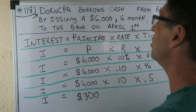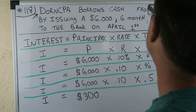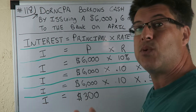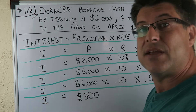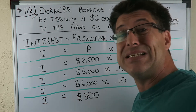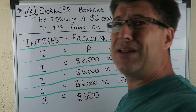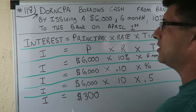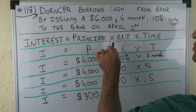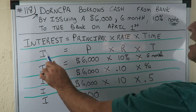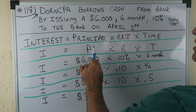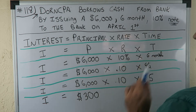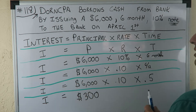In the last video, 117, we recorded a note payable. In the next one we're going to pay the interest, but we have to figure out what the interest is. What's the interest, CPA Strength? Simple interest formula is: Interest equals Principal times Rate times Time. I equals P times R times T.